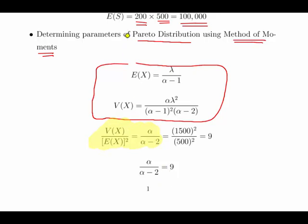So for example, if we were to square the expected value, we get lambda squared over alpha minus 1 squared. Both of those are part of the variance expression. So if we divide the variance by the square of the mean, we are left with alpha divided by alpha minus 2. And we know that the variance squared is 1500 squared, the mean is 500 squared. So 1500 squared divided by 500 squared is simply 9. So alpha divided by alpha minus 2 is equal to 9.